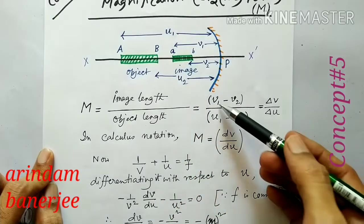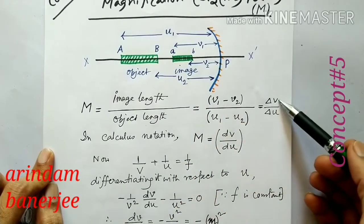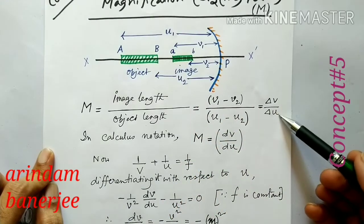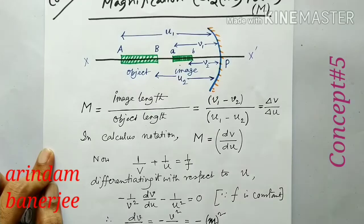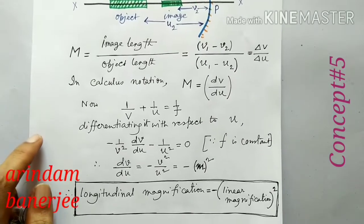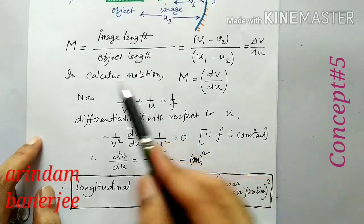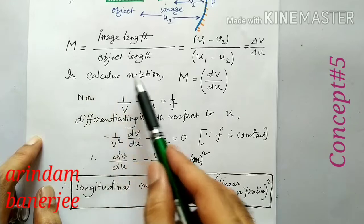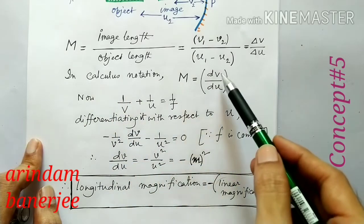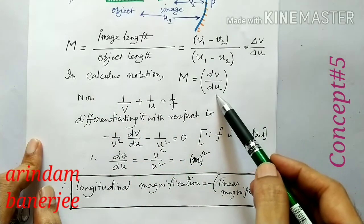That means capital M is the change in v divided by the change in u — del v by del u. So in calculus notation, we can write capital M equal to dv by du.